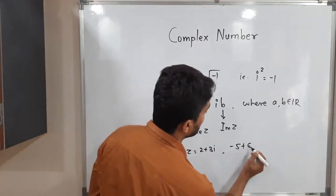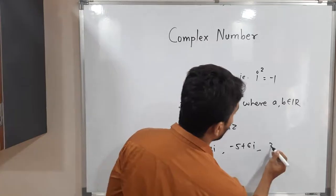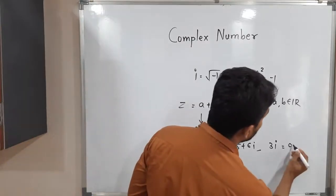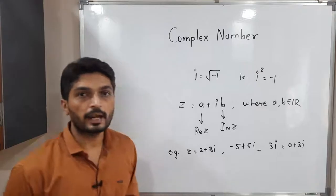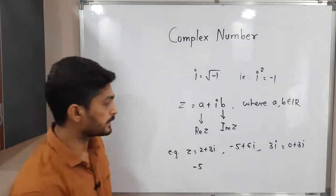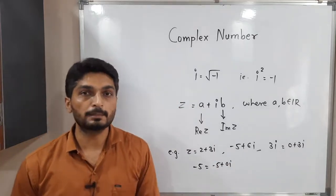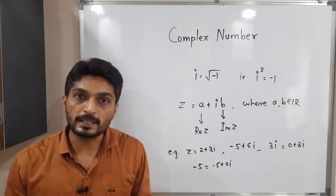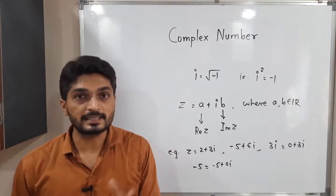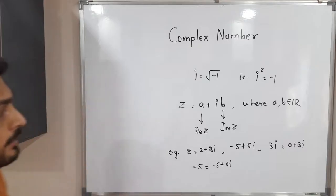Minus five plus six i is also a complex number — minus five is the real part and six is the imaginary part. Three i is also a complex number since we can express it as zero plus three i, where zero is the real part and three is the imaginary part. Minus five is also a complex number expressed as minus five plus zero i. So all real numbers are complex numbers whose imaginary part is zero. Numbers like three i, five i, minus eight i — where the real part is zero — are called purely imaginary numbers.